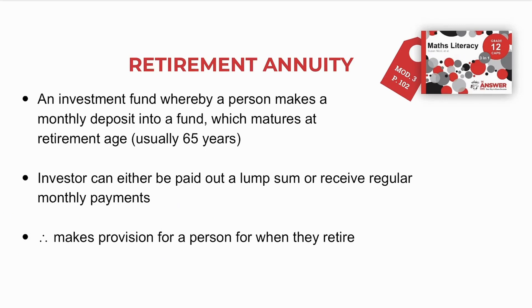Let's look at retirement annuities. A retirement annuity is an investment fund whereby a person makes a monthly deposit into the fund, which then matures at the retirement age — usually around 65 years. The investor can then either be paid out a lump sum or receive regular monthly repayments. This makes provision for a person when they retire. You contribute each month to a fund, and only when you retire will you be paid out a full amount or monthly payments, giving you income when you are no longer able to work.